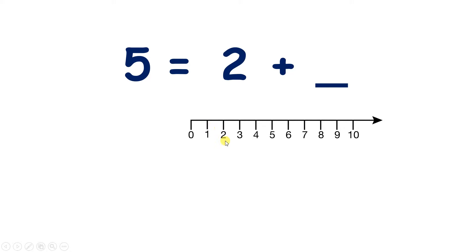Well let's look at our number line. We're on 2, and how many jumps do we need to make in order to get to 5? Well let's count 1, 2, 3 jumps, so that tells us that 2 plus 3 is 5.